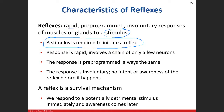A reflex is rapid because it involves at least two neurons — at minimum a sensory and a motor neuron, sometimes with an interneuron making three. The more neurons involved, the slower the reflex, though still fast. Reflexes are pre-programmed — they happen the same way every time. Touch something hot, you pull your hand away; step on a tack, you pull your foot away; the doctor taps your knee, you get the knee-jerk reflex. And they're involuntary — you can't control them.